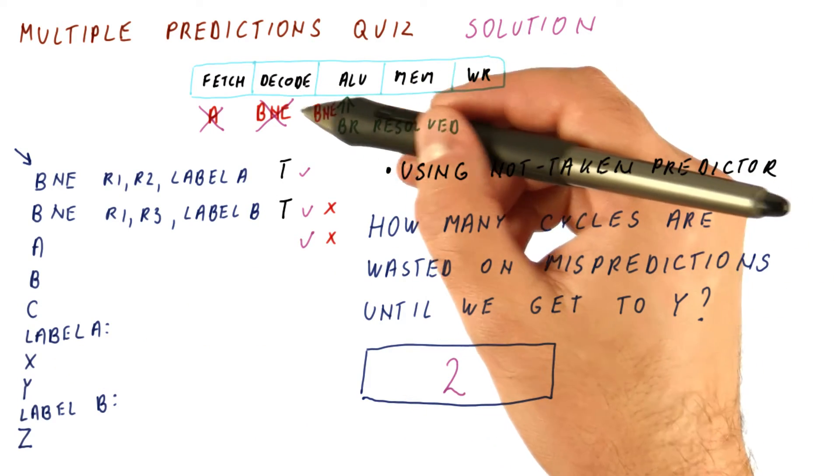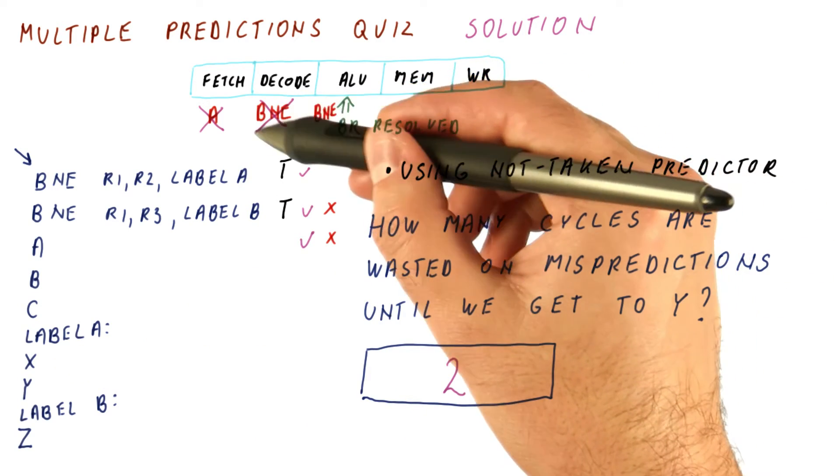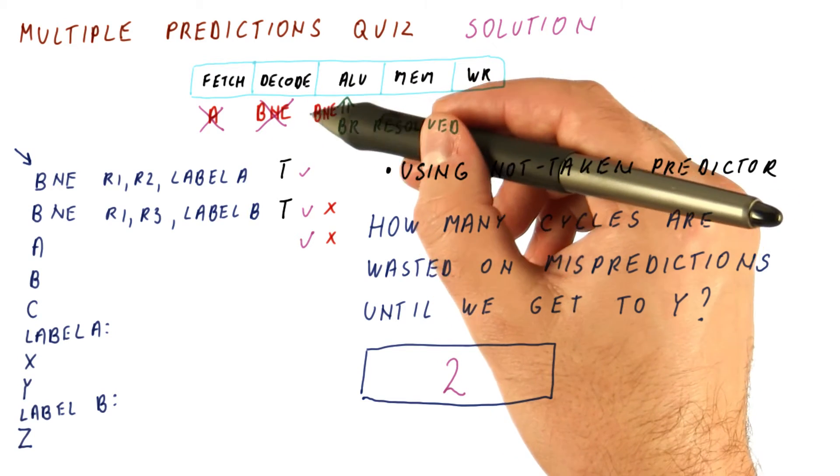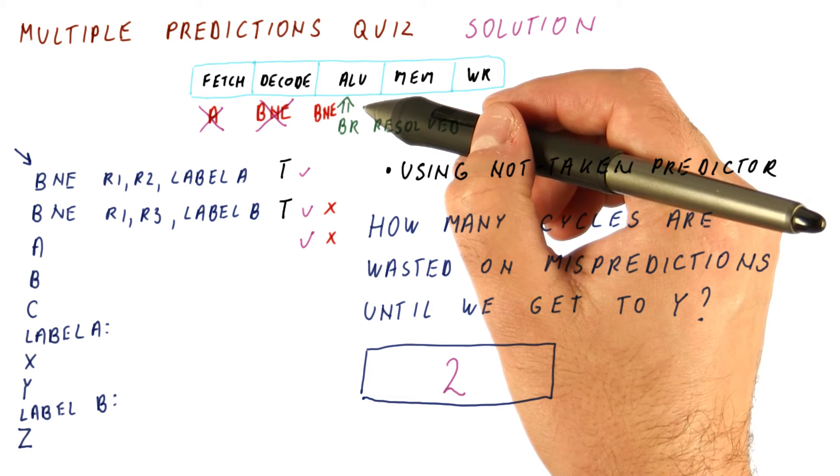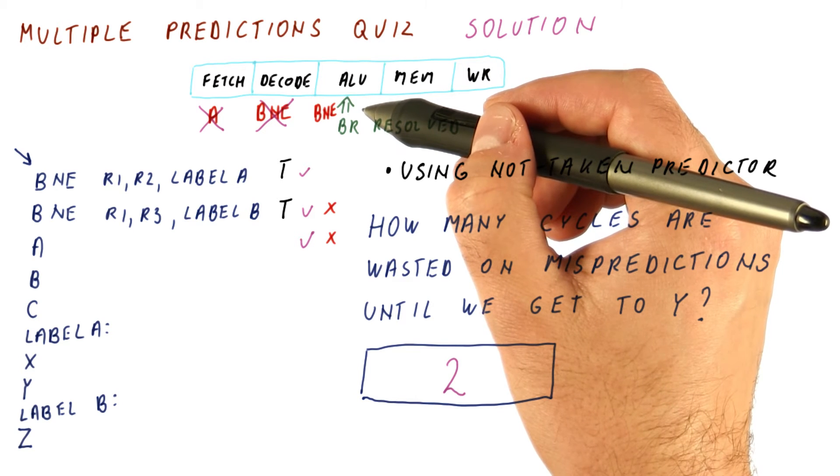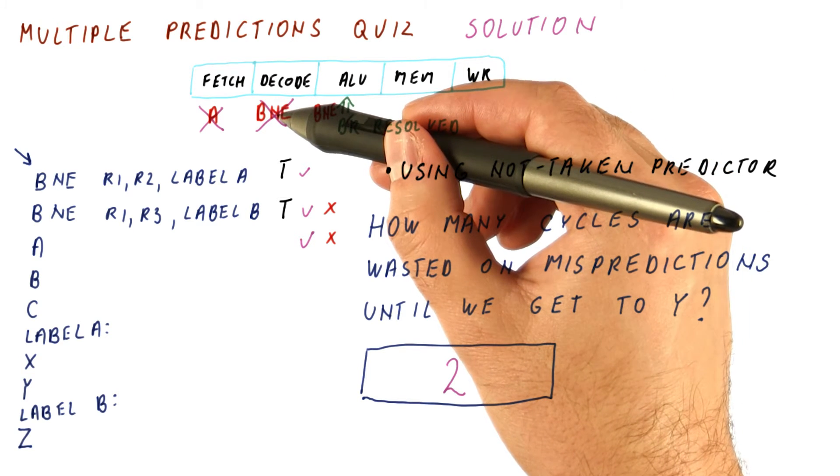So what happens is really if a branch has been fetched in error because of a previous misprediction, that branch never gets a chance to cause a pipeline flush because it itself gets flushed before that.